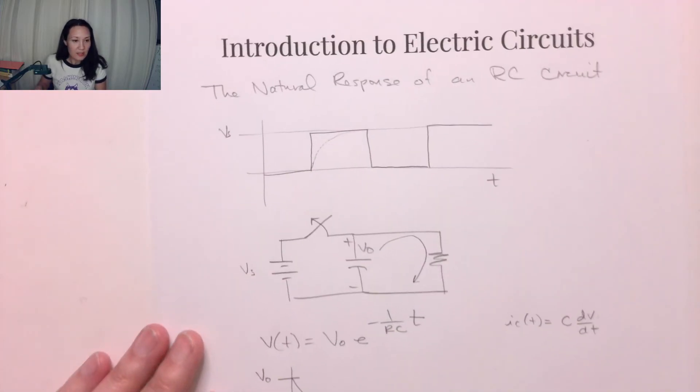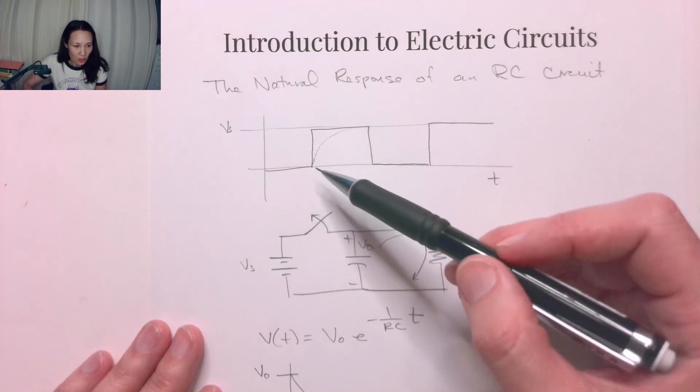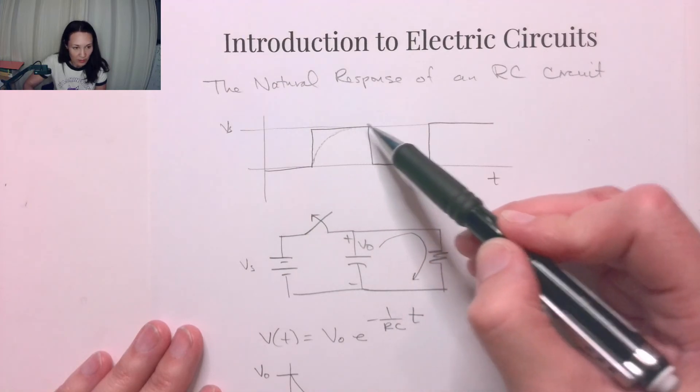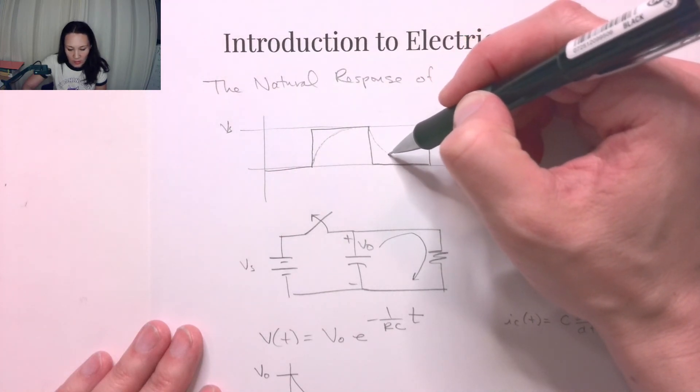If we put this together with a square wave like this, our oscilloscope would show this charging cycle—this is our step response. The moment we turn off our source, we have this discharging cycle.